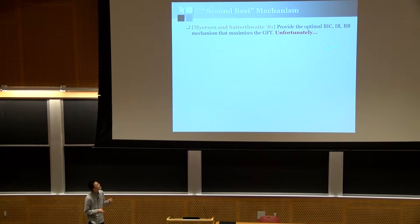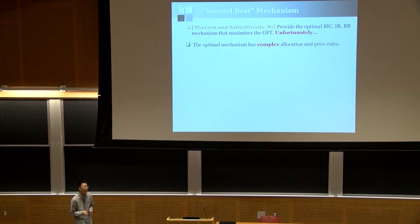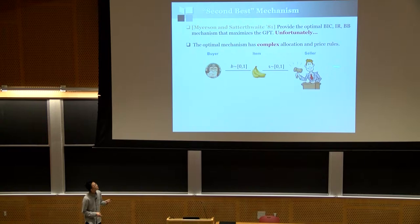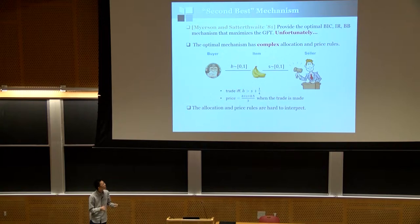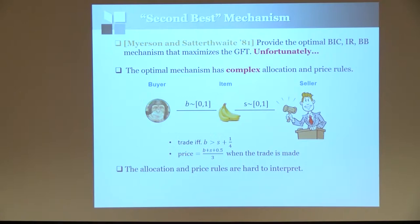Myerson and Satterthwaite also provided an optimal BIC and budget-balanced mechanism to maximize gains from trade. Unfortunately, the optimal mechanism has extremely complex allocation and payment rules, requiring solving a set of differential equations that depend on the buyer's and seller's distributions. For example, if both the buyer and seller have uniform distributions on [0,1], the optimal mechanism trades if and only if the buyer's value is at least a quarter greater than the seller's value, with price rule (B + S + 1/2) / 3 — both rules are hard to interpret, even in this simple example.